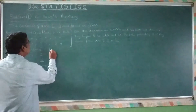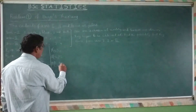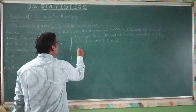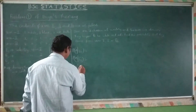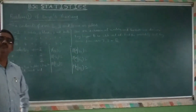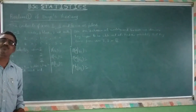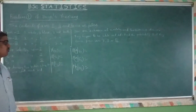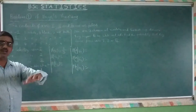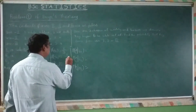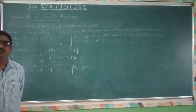Now, you want to calculate probability of E1, probability of E2, and probability of E3. What is probability of E1? Probability of selecting Urn 1. How many urns are there? One urn out of three. So, 1C1 divided by 3C1 equals 1/3. Similarly, Urn 2: again 1/3. Urn 3: again 1/3. Three urns, one is going to be selected — the probability is 1/3.